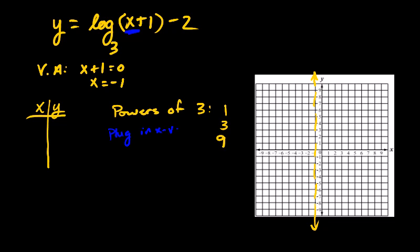Plug in x values that create these three numbers. So, think about this. You've got x plus 1 on the inside. What could I plug in for x that would create 1? That'd be 0. Because 0 plus 1 is 1. What could I plug in that would create 3? That would be 2. Because 2 plus 1 is 3. And what could I plug in that would create 9? That would be 8. Because 8 plus 1 is 9.